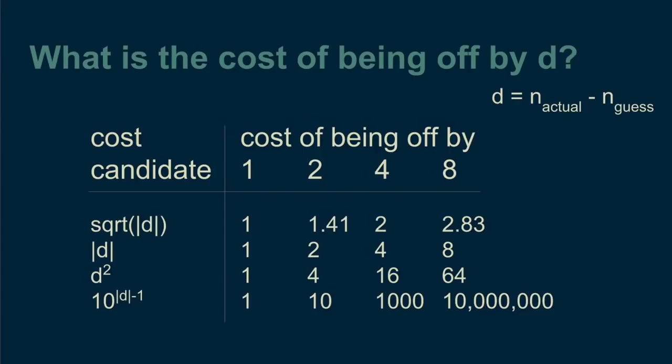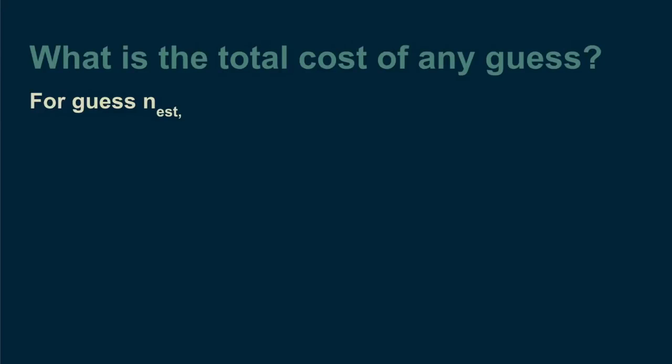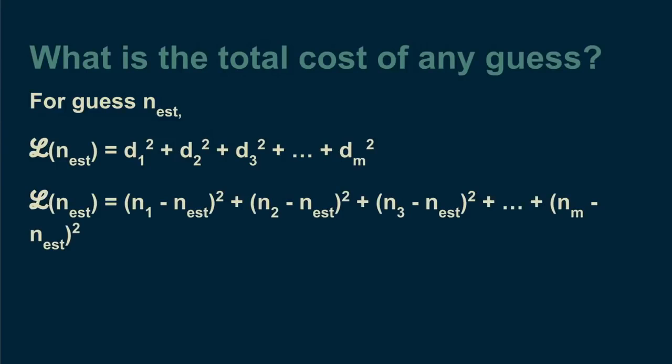In all these cases, the cost goes up as the estimate gets further away from the actual count of the bag. For our purposes, we'll start with the squared deviation. That's our cost function. Calculating the total cost is straightforward. Another name for cost is loss, which comes with a cool curly L symbol. So we'll switch to that. The total loss for a given estimate can be calculated by adding up the cost associated with each bag. This is the square of the distance between the estimate and the number of M&Ms in that bag. In this form, we can calculate it.